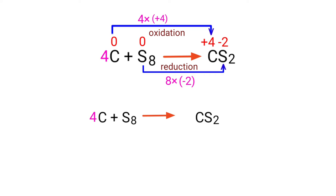Now balance the number of atoms in this equation. In the reactants side, there are 4 carbon atoms and 8 sulfur atoms. On the products side, there is 1 carbon atom and 2 sulfur atoms.